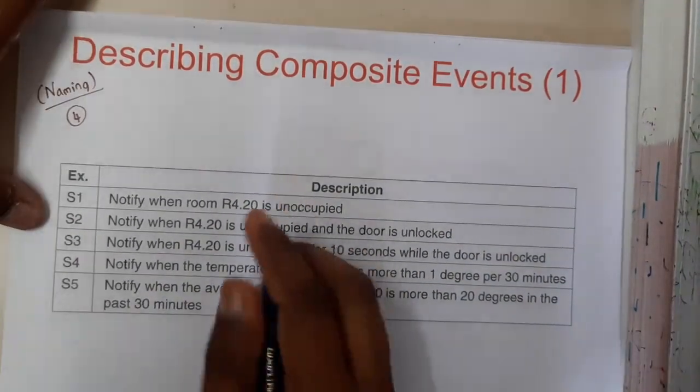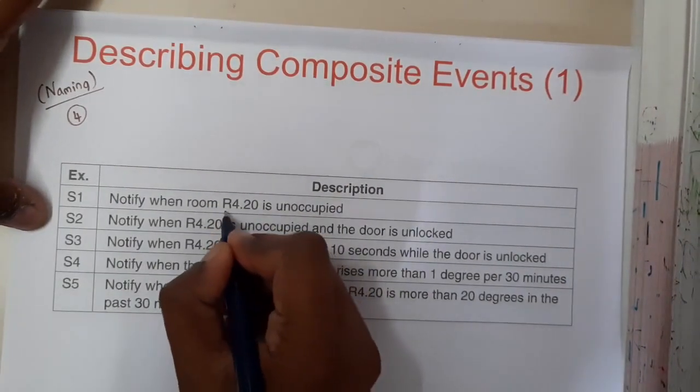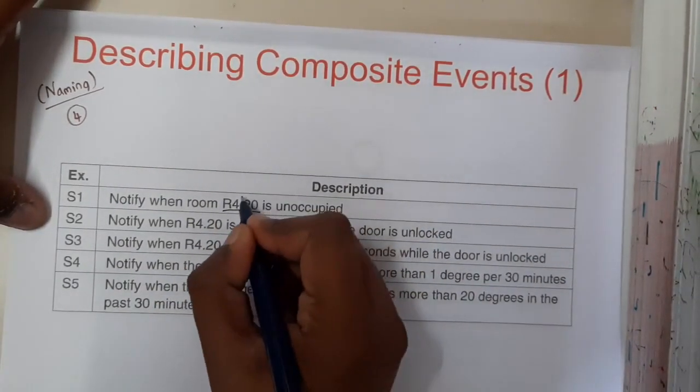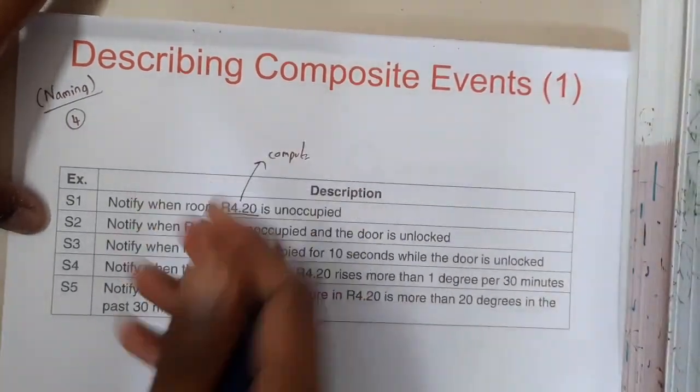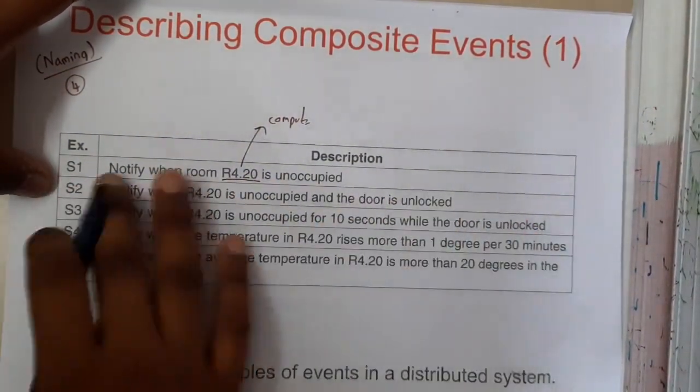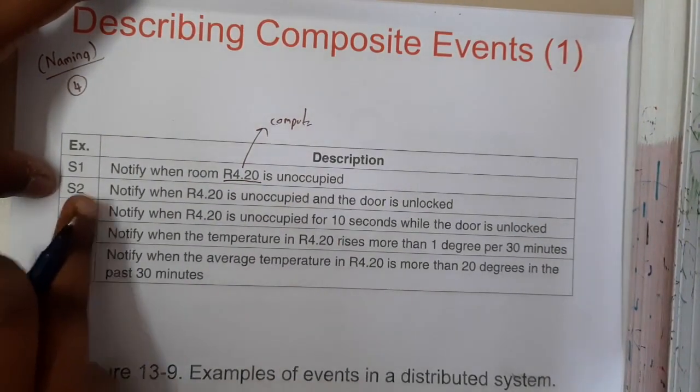So basically in this example, R4.20 is a computer or a system or a device. Here in this table, they are representing the events with their descriptions.